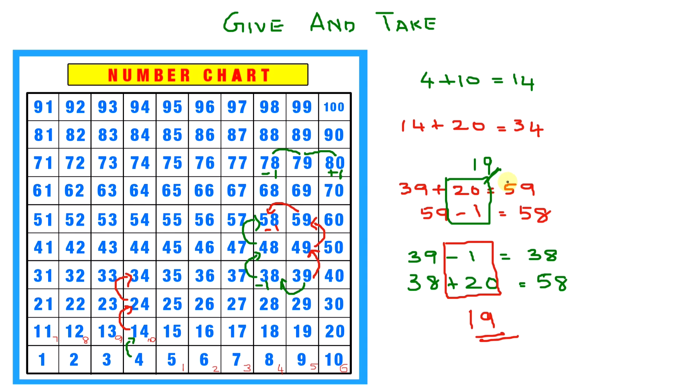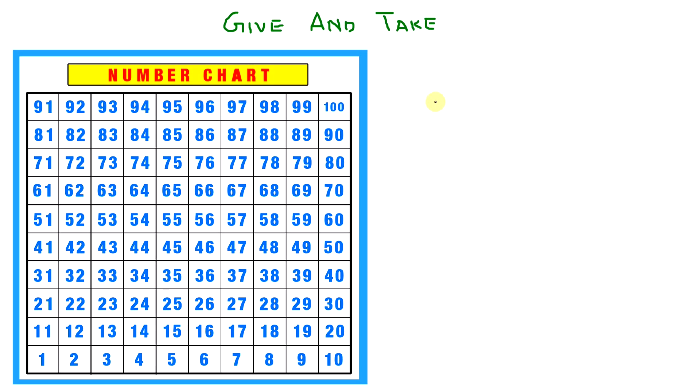So that was fun. Now let's try solving a few problems using the number grid again. What does 57 minus 30 equal? We have 57. Let's jump down three rows. That's three tens. That is 47, 37, and 27. So 57 minus 30 equals 27.